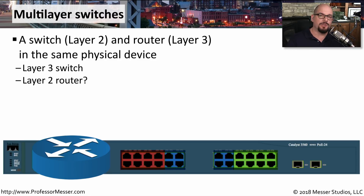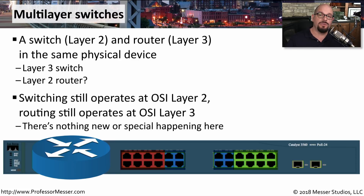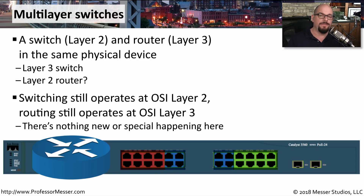This is often a function that is bundled together and marketed as a single device, often referred to as a layer 3 switch. In reality, these two functions work independently inside the individual chassis. There might be switching occurring at layer 2, and a completely different part of this device provides the router at layer 3. We've effectively taken two different devices — a switch and a router — and combined them within the same chassis.